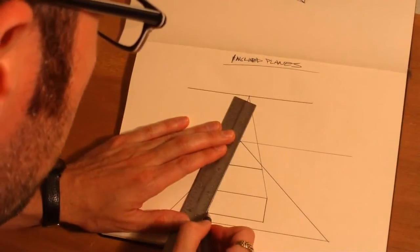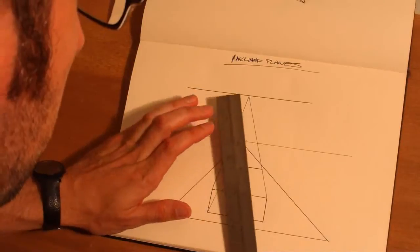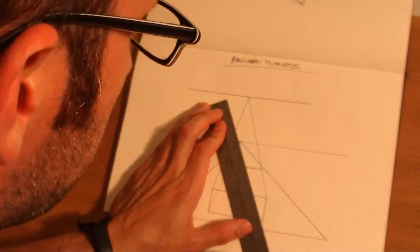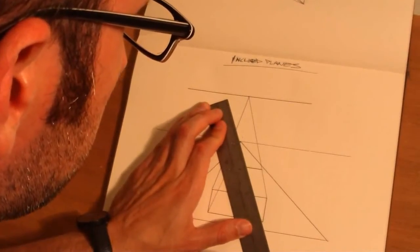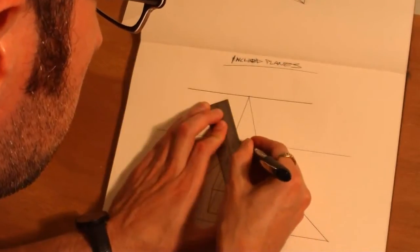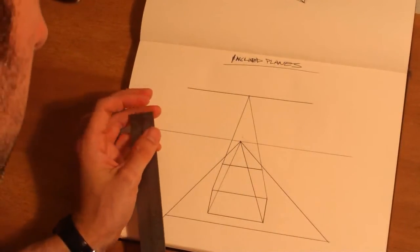Because the top of the box is going to be inclined and the bottom is not.